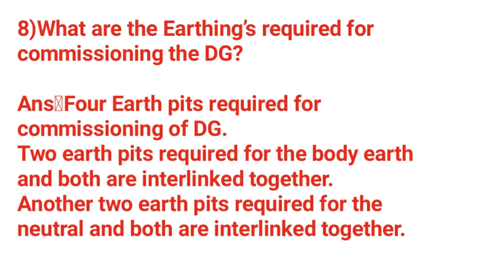What are the earthings required for commissioning a DG set? Four earthings are required for commissioning a DG set: 2 earthings for body earthing and 2 earthings for neutral earthing. Both body and neutral earthings are interlinked together.